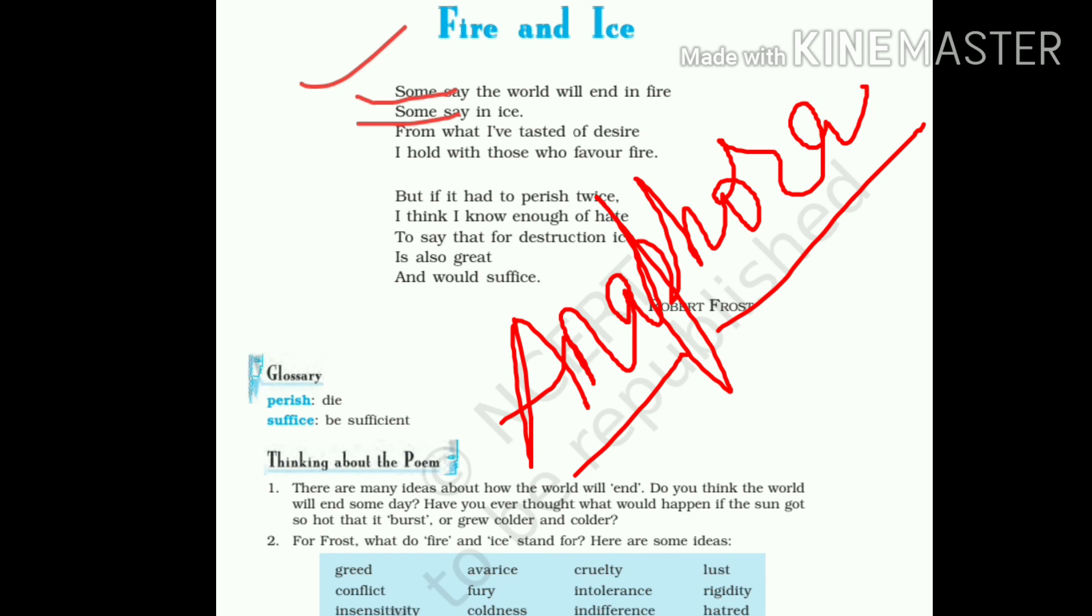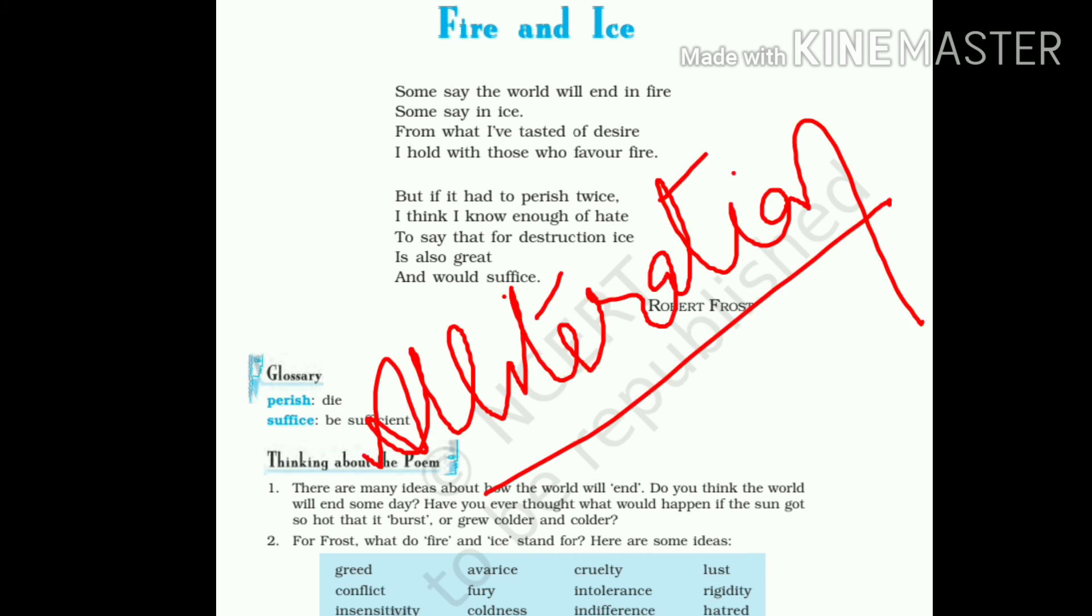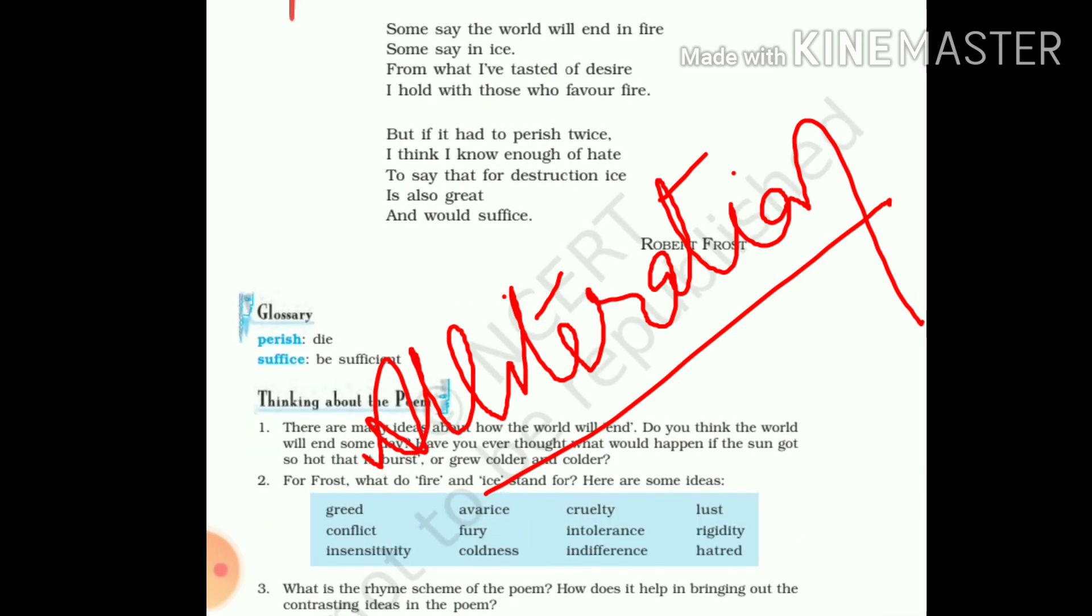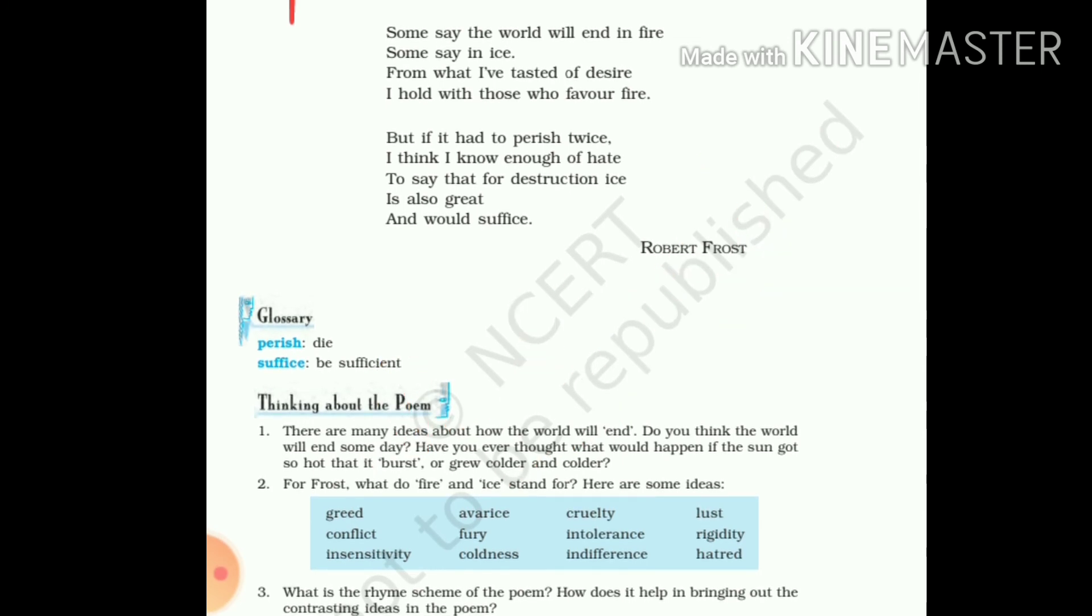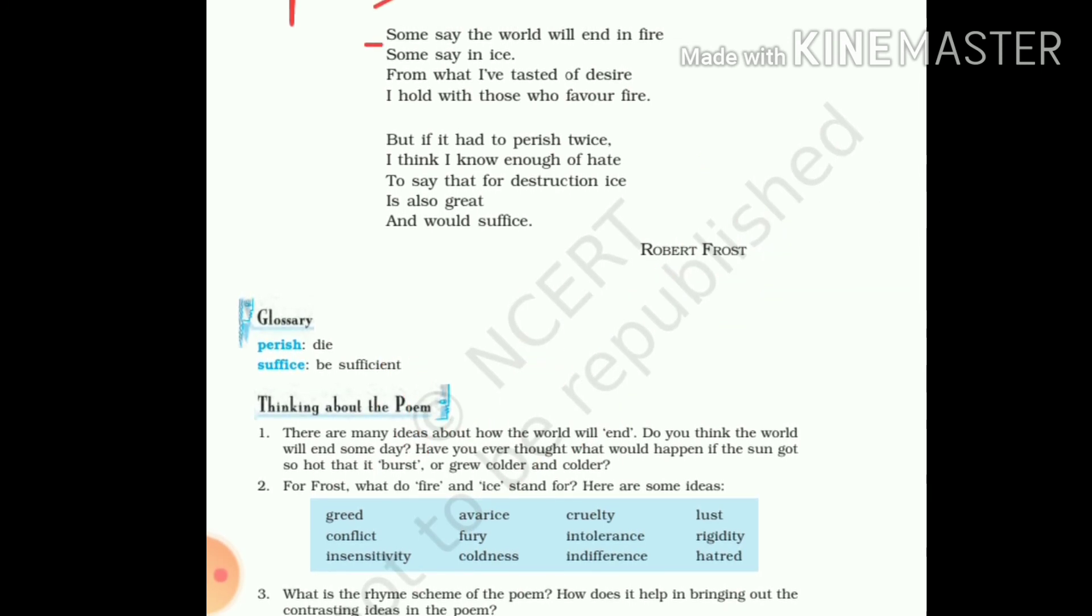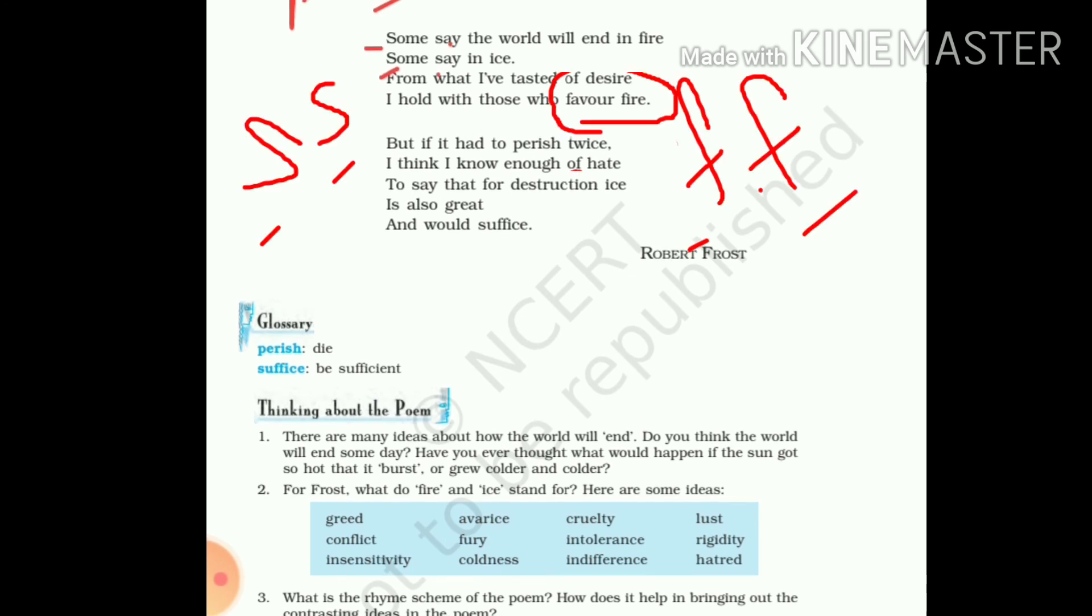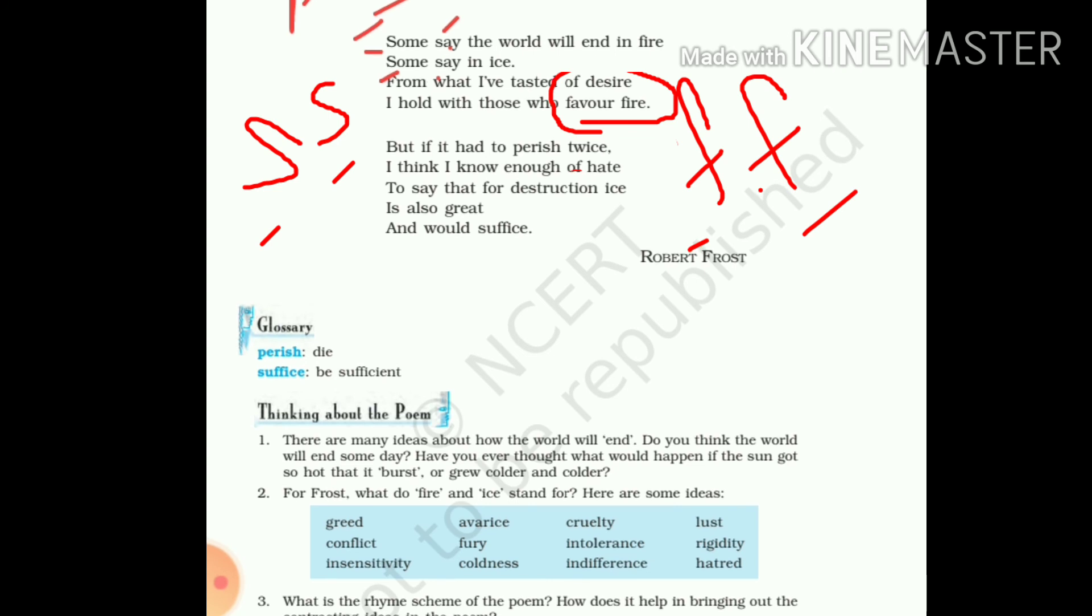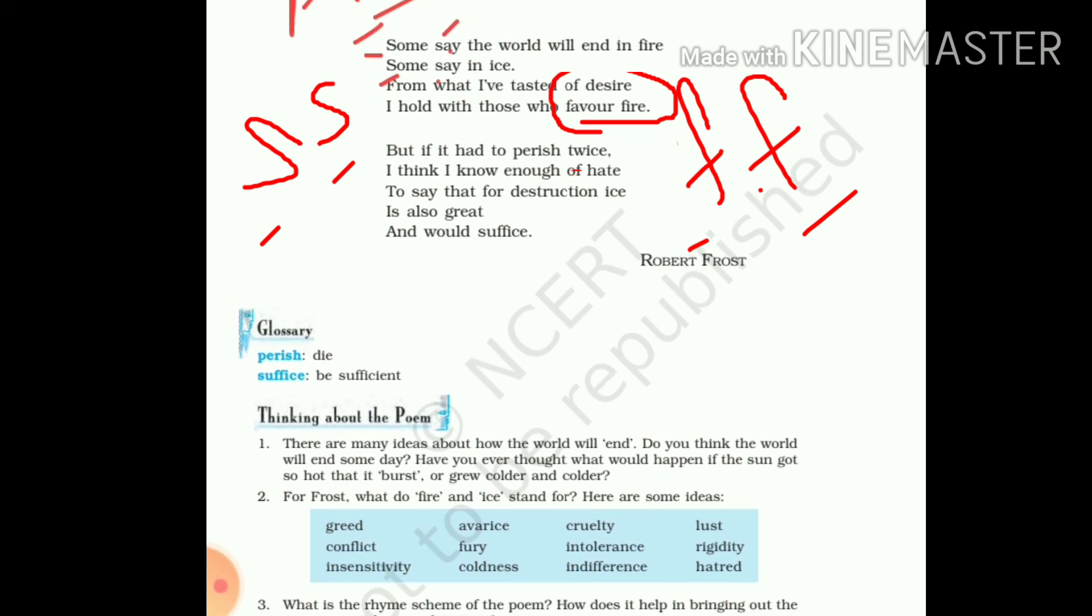Now, the next literary device: alliteration. Alliteration is the repetition of the same consonant sound at the beginning of the words. So here we see 'some say'. Some say - alliteration. S consonant sound. The same consonant sound is used in these two words. So alliteration is used here.